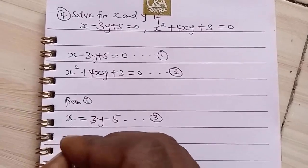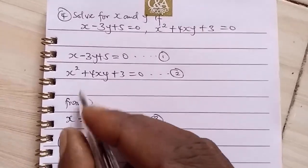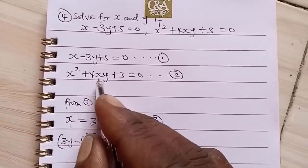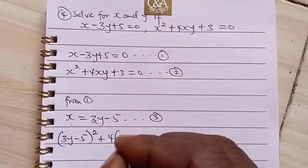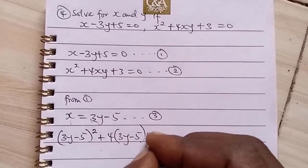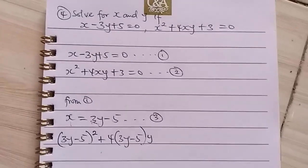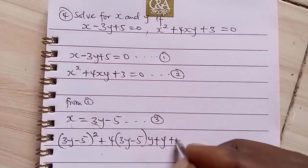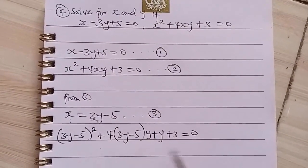We're going to have 3Y minus 5 squared plus 4, instead of X again, we replace it with 3Y minus 5, then we now put Y, then plus Y, we now have plus 3, is now equal to 0. Now, having done this, we can evaluate it.